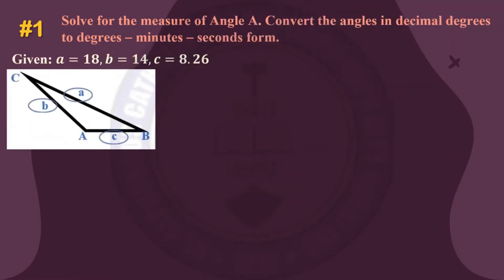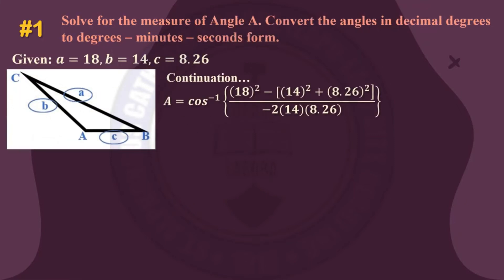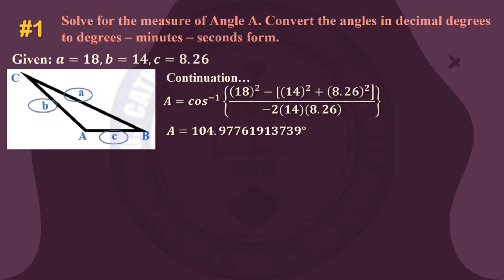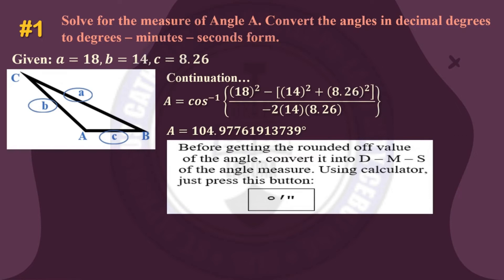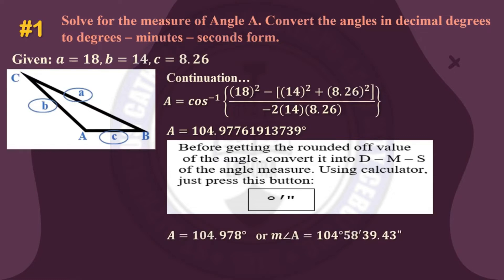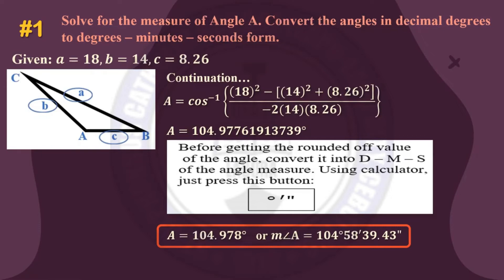Continuing with number one: A = arccos((18² − 14² − 8.26²) / (−2 × 14 × 8.26)). Using our calculator, A = 104.97761913739°. Before getting the rounded-off value, convert it into degrees-minutes-seconds. Pressing the conversion button, angle A = 104.978° or equivalently 104° 58′ 39.43″.